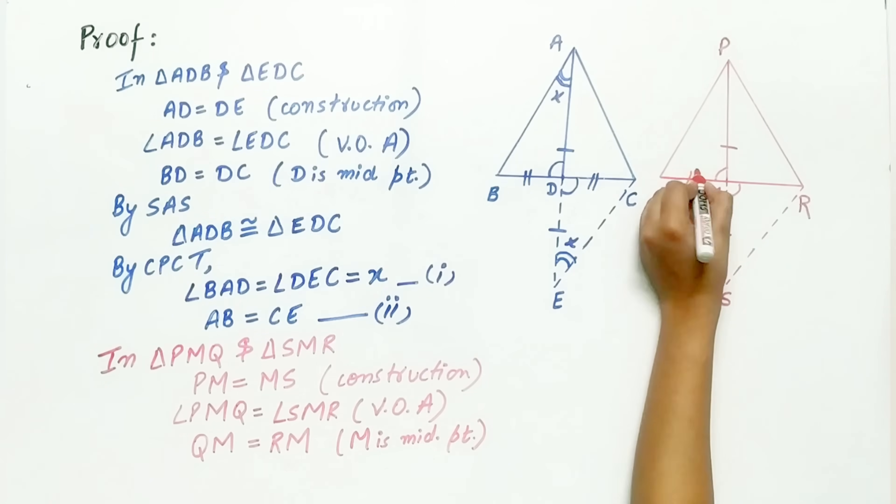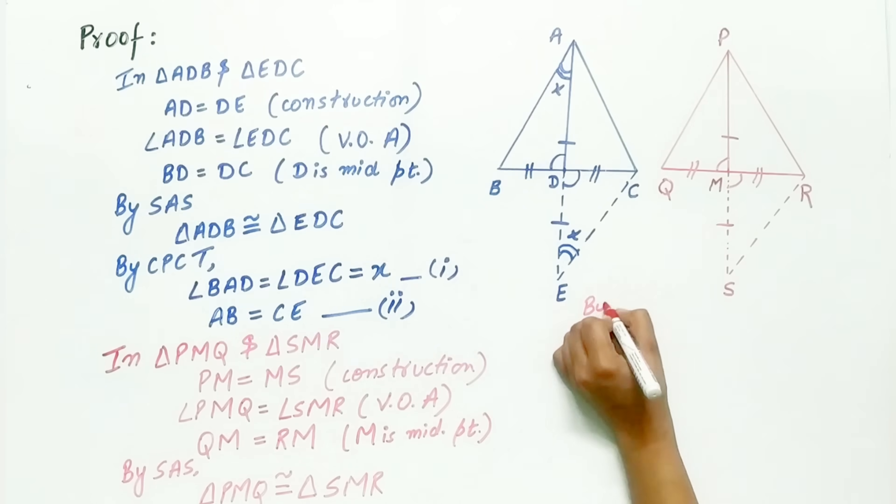Hence, by SAS, both these triangles are congruent. And by CPCT,